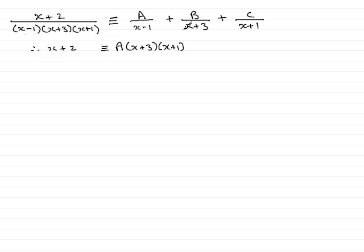Then we go to the second fraction, multiply that by this denominator, and the x plus 3 gets cancelled out, leaving you with b times x minus 1, x plus 1. And the final fraction, the x plus 1 gets cancelled, leaving us with c times x minus 1, x plus 3.